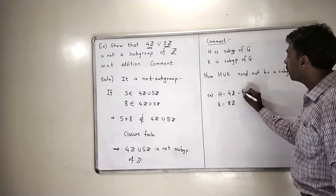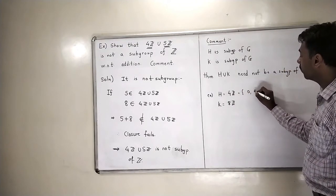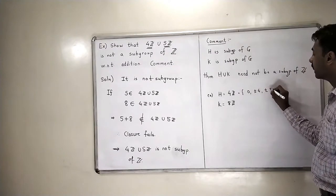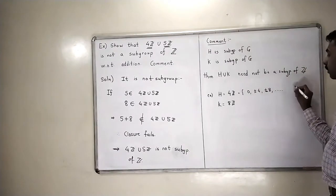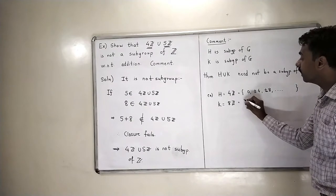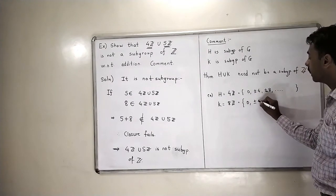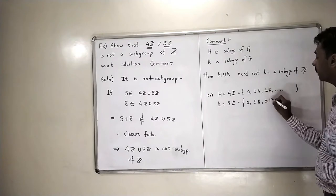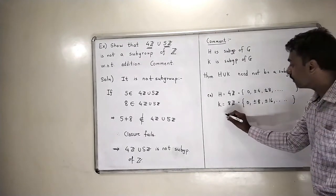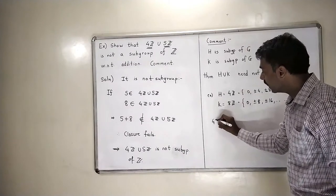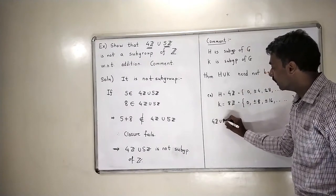Now what is 4Z? 4Z is all multiples of 4. 0 plus minus 4 plus minus 8 and plus minus 12 and so on. What is 8Z? 8Z is 0 plus minus 8 plus minus 16 and so on. So if I take the union of these sets 4Z union 8Z,